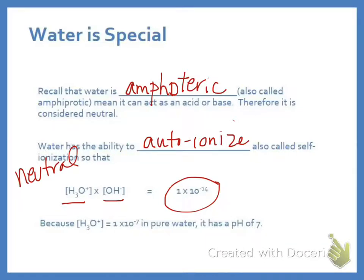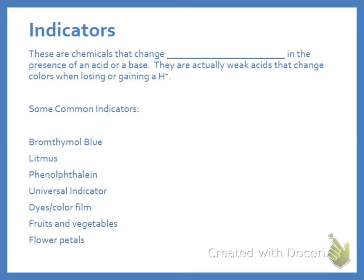Because of that, in pure water, pH is 7 because this is its value. That's going to take us to indicators, which we have to talk about before we talk about titrations.